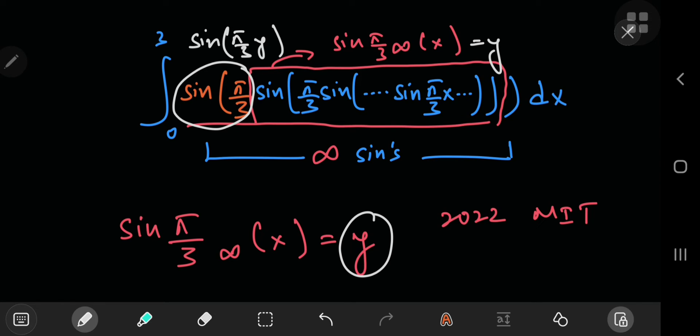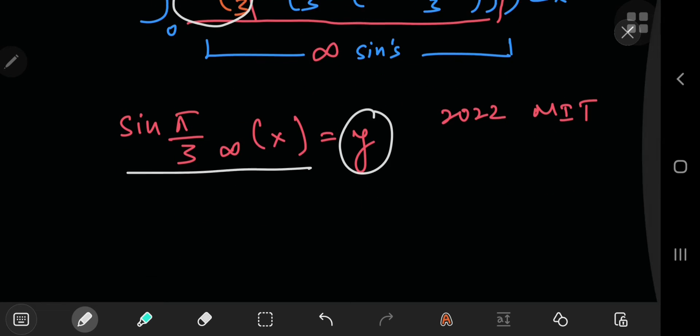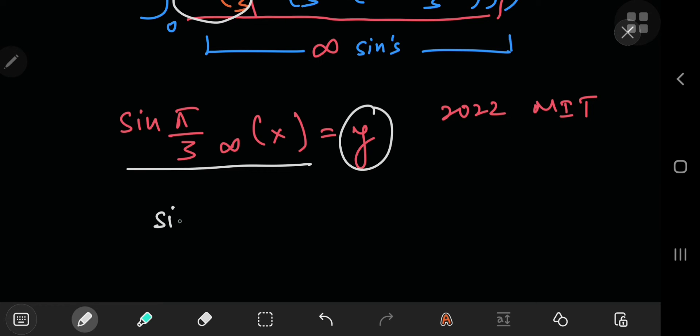Now this actually makes life a lot easier for us, because we know that all of this on the left-hand side of our equation is just sin(π/3 times y), and this is equal to y. So now my problem is reduced to solving an equation in y.